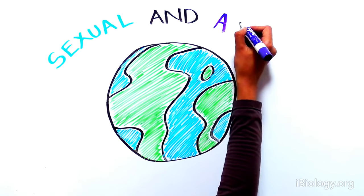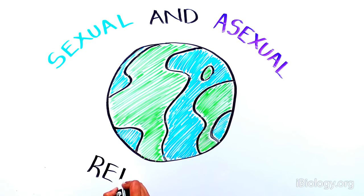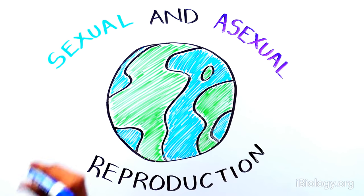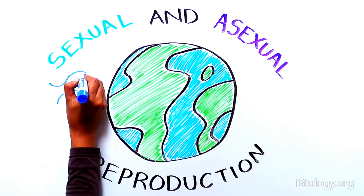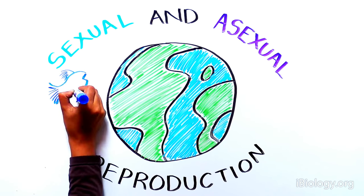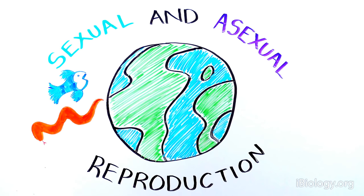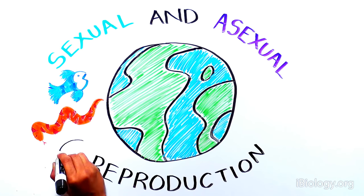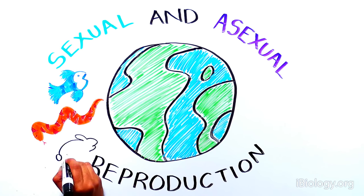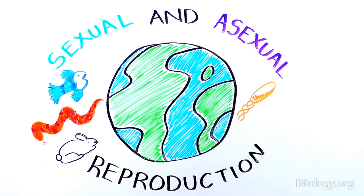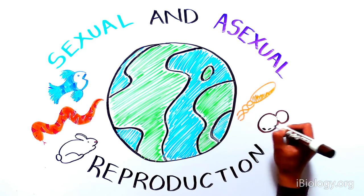Both sexual and asexual reproduction provide important methods for species survival and adaptation, allowing the millions of species on earth today to evolve and survive in their current forms.